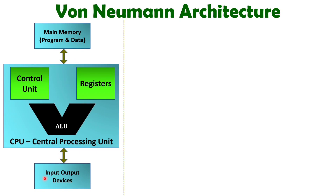By giving input commands, you can execute any program. But at the same time, you cannot execute instructions of a program and access data simultaneously — that's why Von Neumann architecture is considered a bit slower. The CPU has a control unit, registers, and ALU. The control unit controls everything, including the system bus and internal operations of the CPU. The ALU is used to execute instructions. By input devices we give commands, and by output devices we see our output.